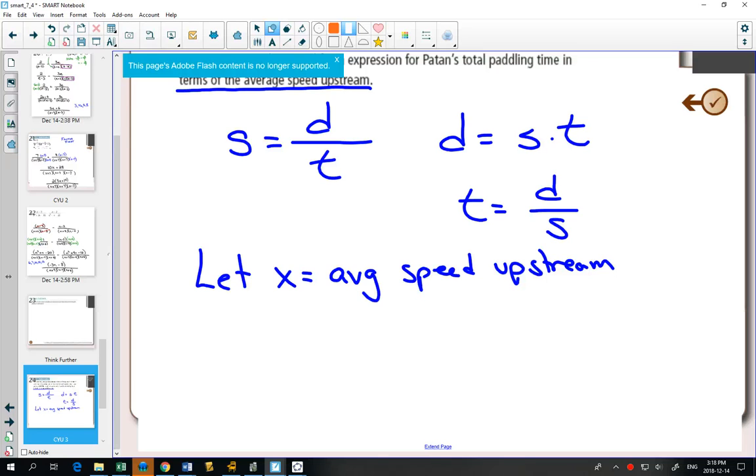He travels upstream, he travels downstream. I'm going to say time number one is going upstream. Time is distance divided by the speed. How far did he go upstream? 10 kilometers. What was his speed? X.